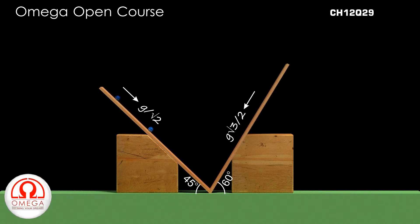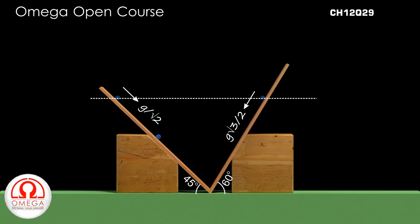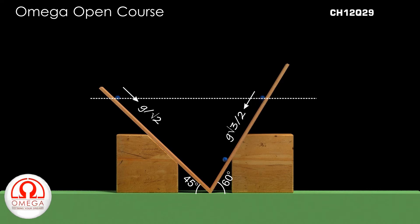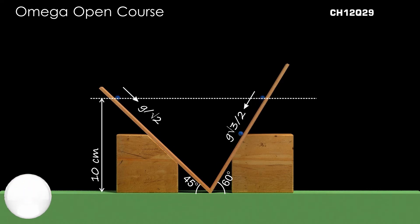From the conservation of energy, we know that the particle will rise to the same level on both sides of the incline. So the height attained on both sides of the incline is 10 cm. Let us denote this value by h.